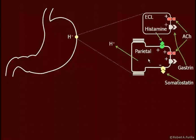Let's take a look at these acid-secreting cells in more detail. Here's the parietal cell, which secretes acid. It's triggered by gastrin, ACH, and histamine. ECL cells — enterochromaffin-like cells — are also triggered by ACH and gastrin to release even more histamine. Parietal cells are inhibited by somatostatin and prostaglandins.